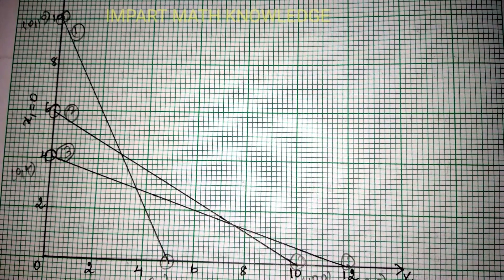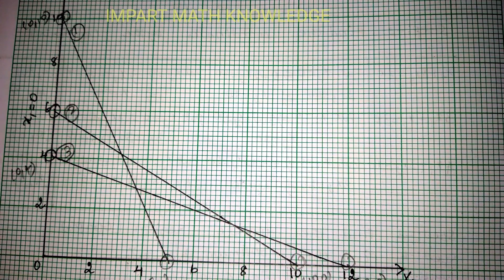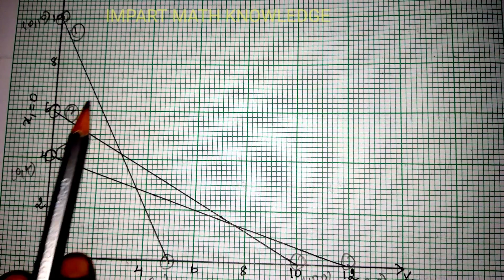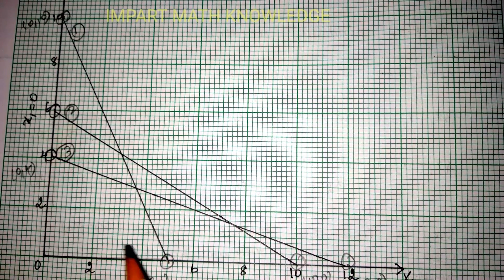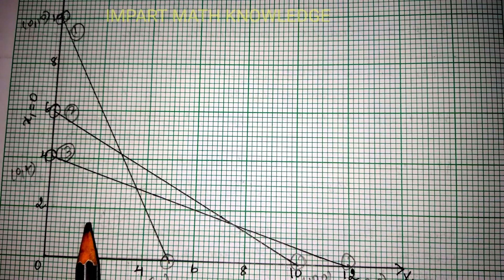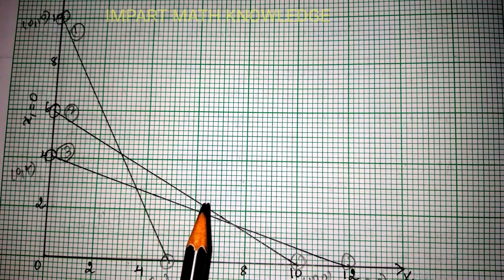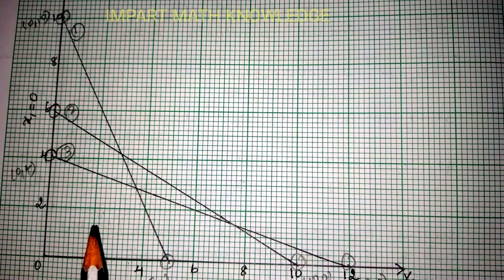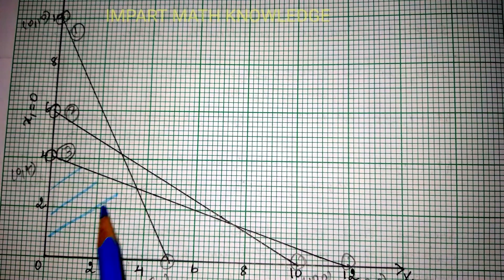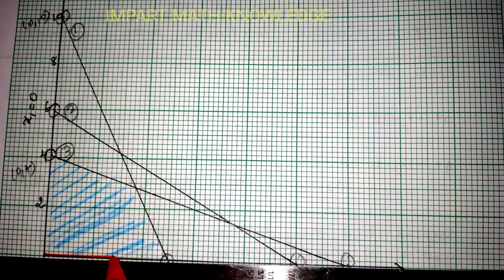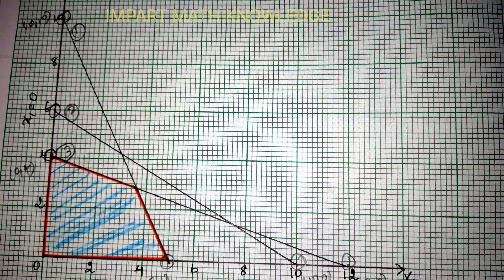Since all the constraints are less-than-or-equal-to type, the feasible region falls under the area bounded by all three lines. Shading each constraint's region inward, the common region is the smallest bounded area. As long as all coordinates are positive and inequalities are ≤, you can shade this region without doubt. This is the feasible region.